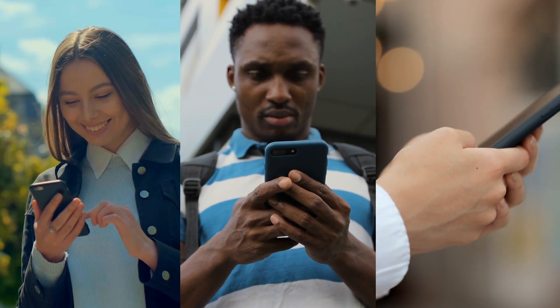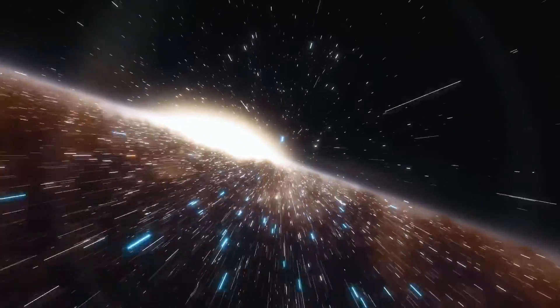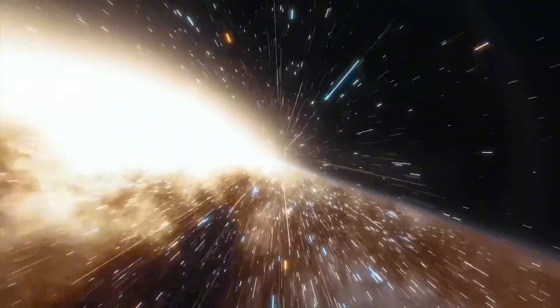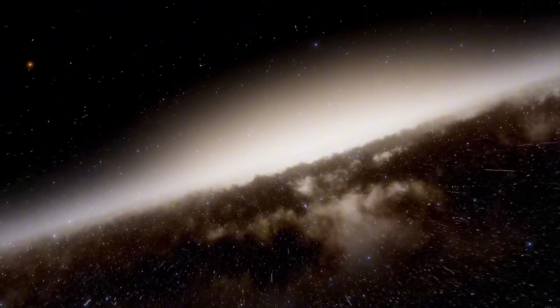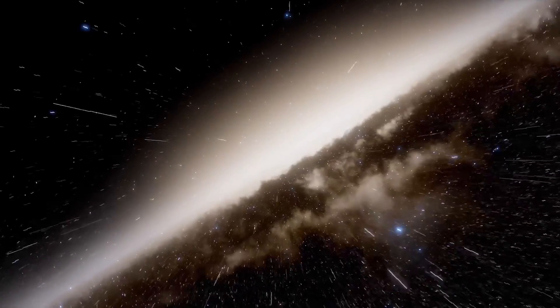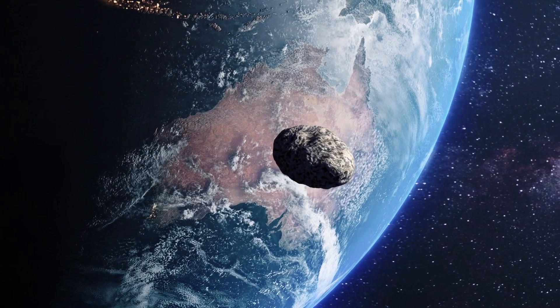And yet, stripped of the noise, 3i Atlas remains extraordinary. It is a relic from another sun, a messenger bearing the chemistry of alien worlds. Its path, so nearly aligned with our own planetary plane, reminds us how thin the boundary is between our neighborhood and the vast interstellar sea beyond.